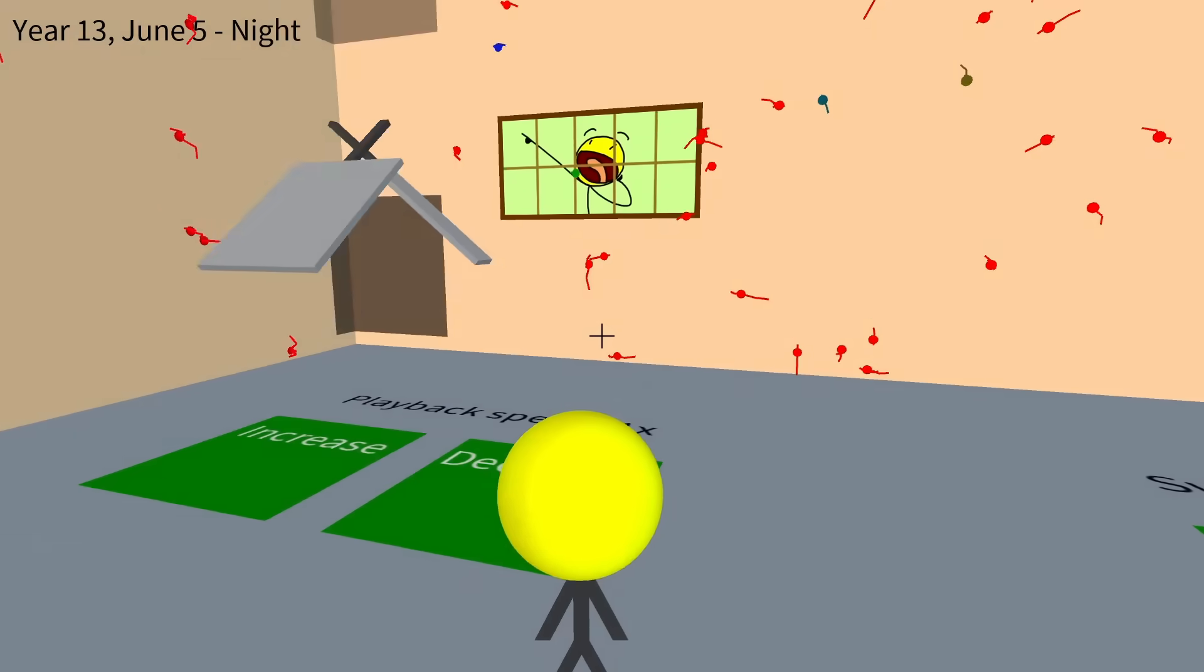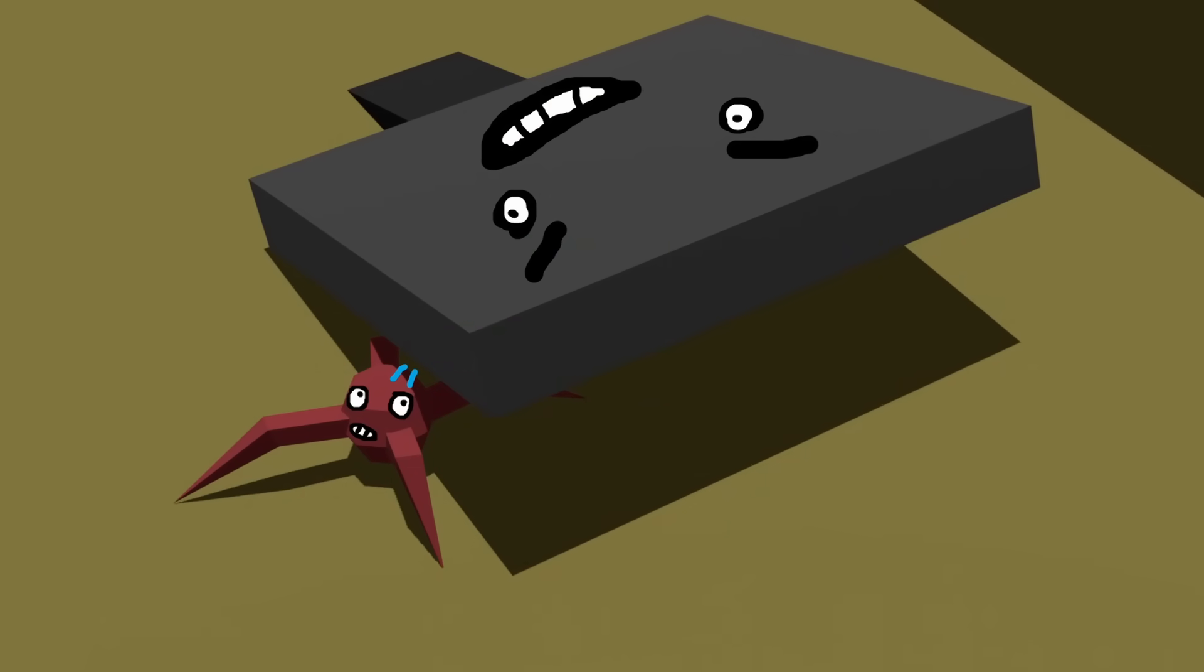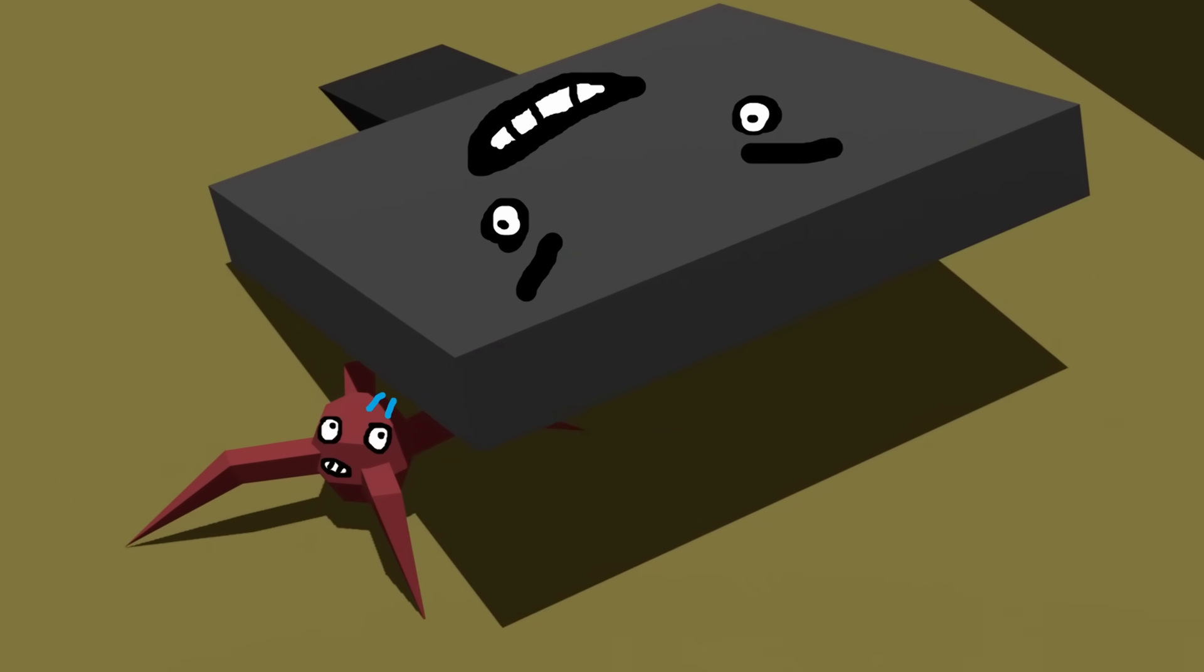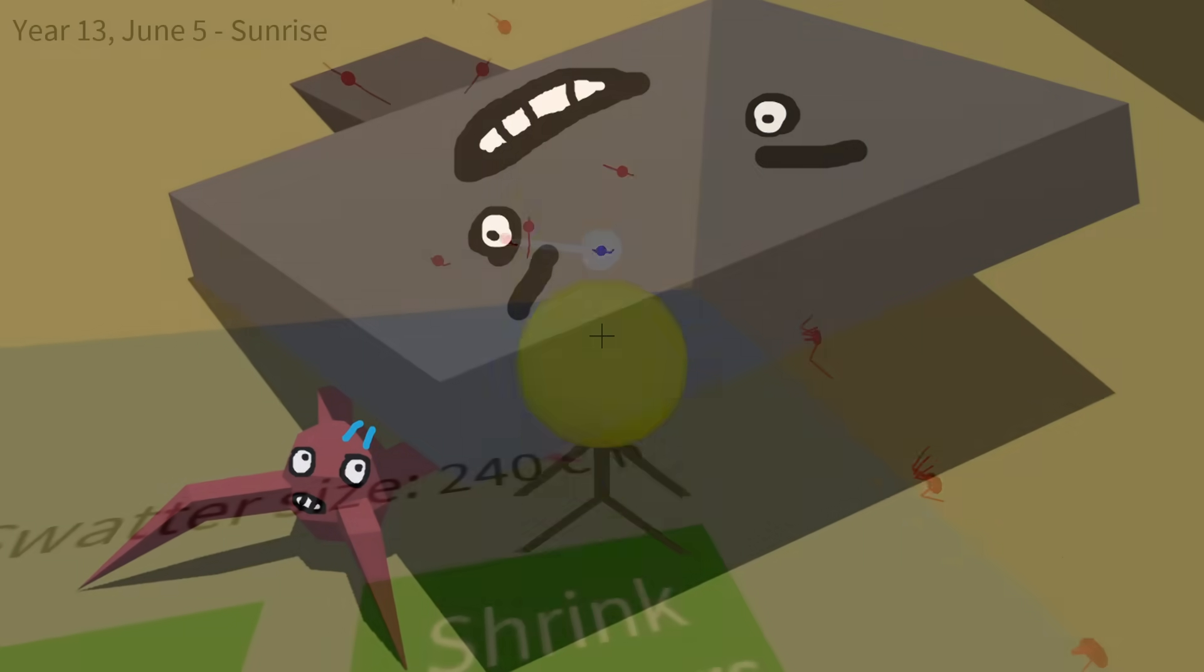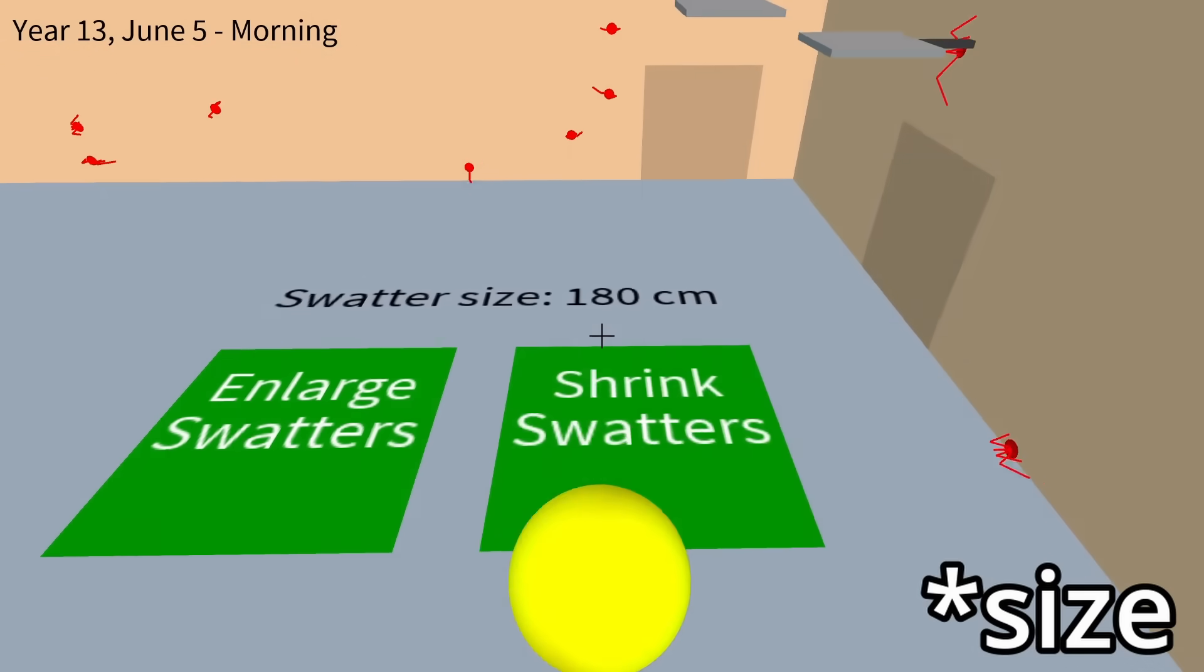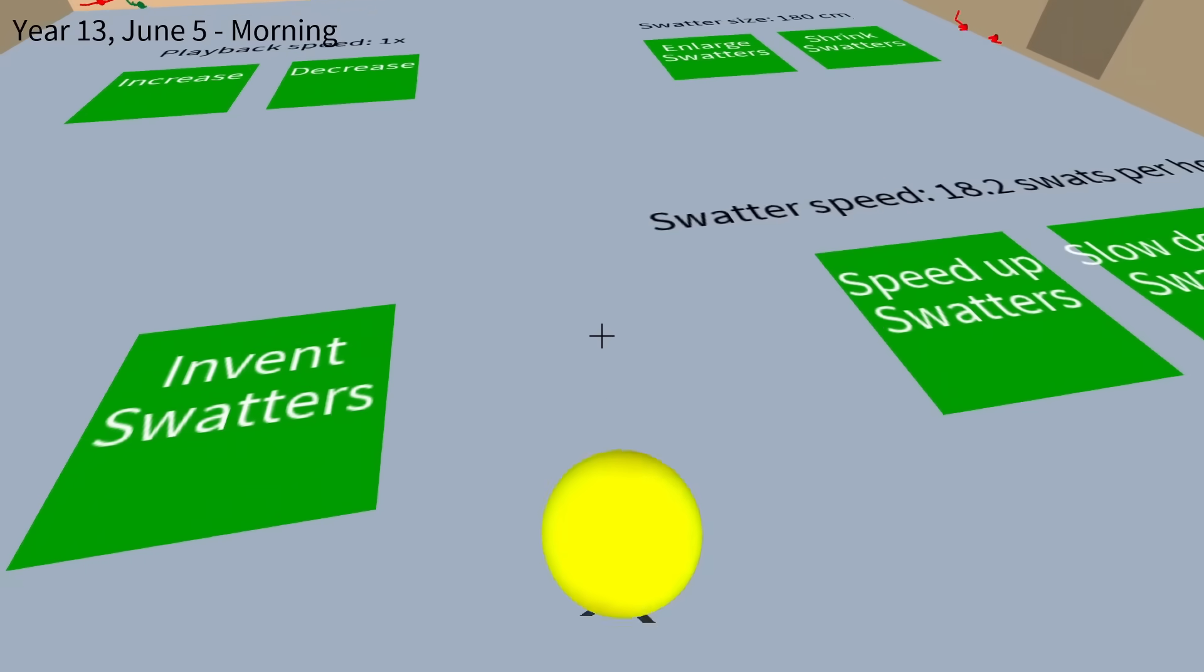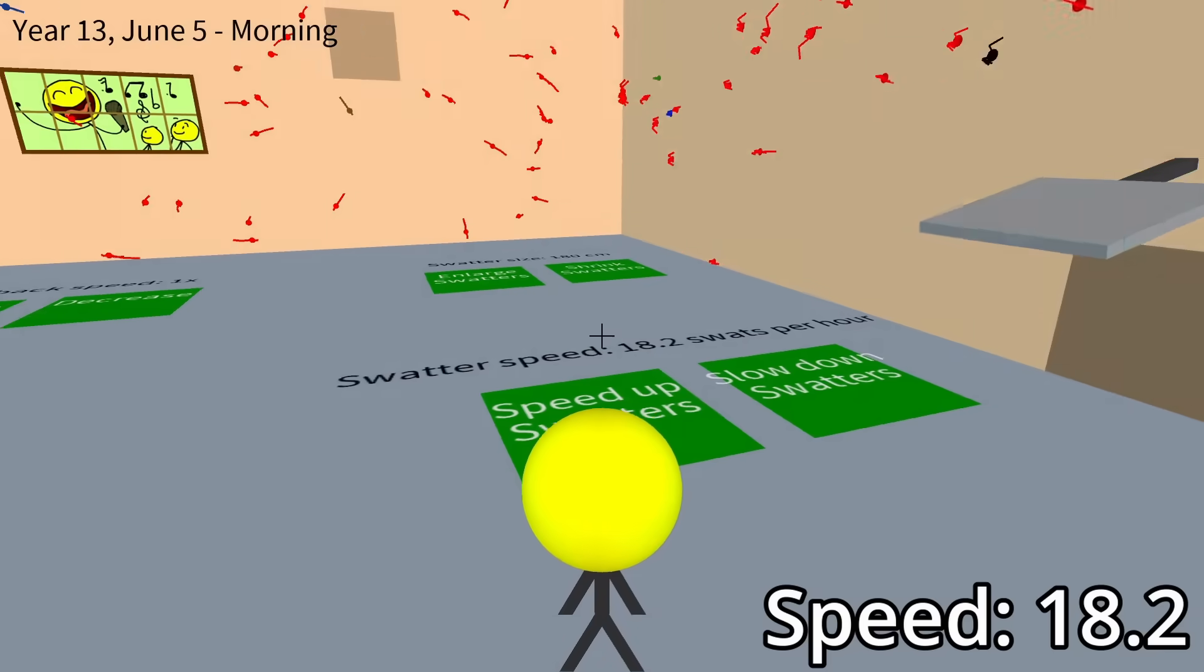But I thought, as one final hurrah before I burn this world to the ground, is to speed up the swatters up to the maximum speed possible, which is like 150. But also make them a little smaller so they don't all crowd in that corner like they did before. So let's go to a speed of 180, that feels about fair. And then this is normal playback speed, there's no speeding up here.